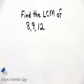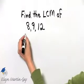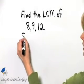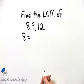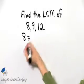Let's find the least common multiple of 8, 9, and 12. We'll start by writing the prime factorization of each number.